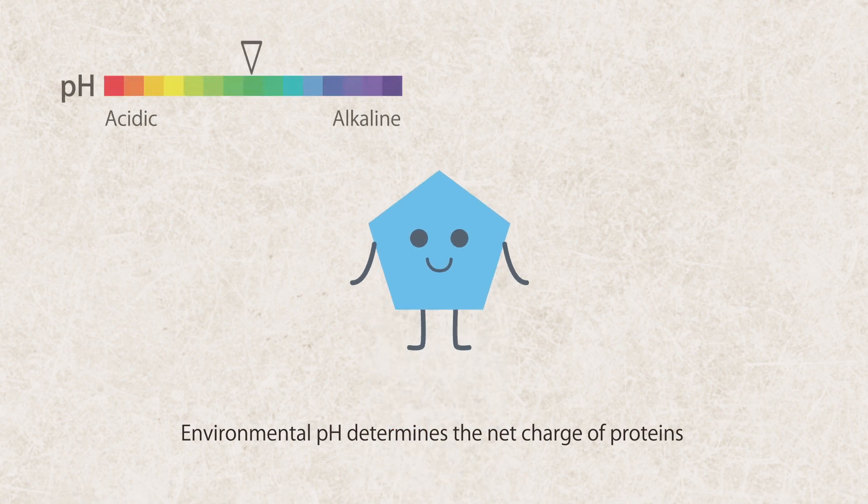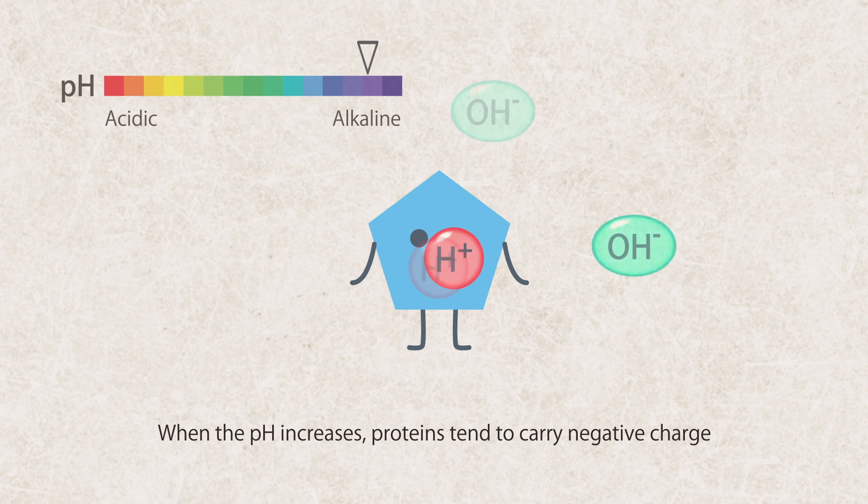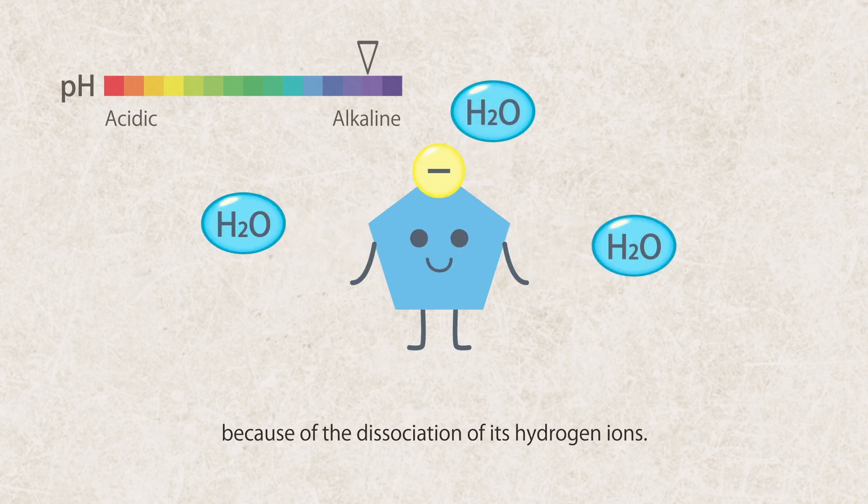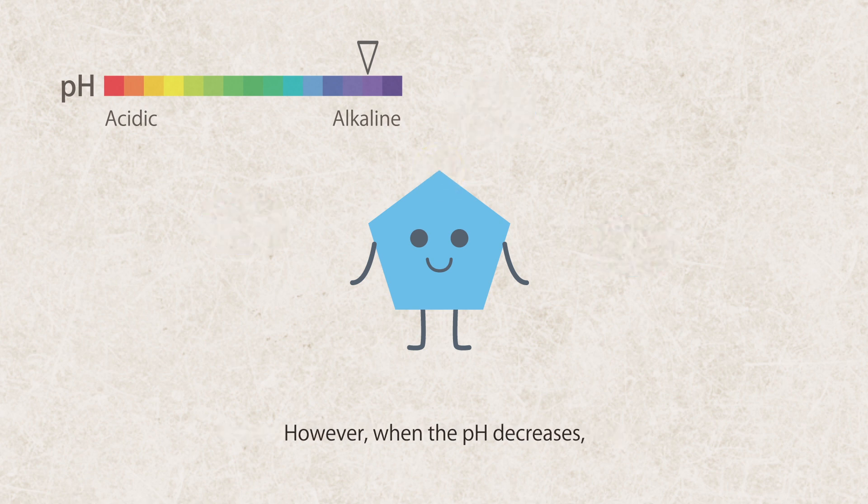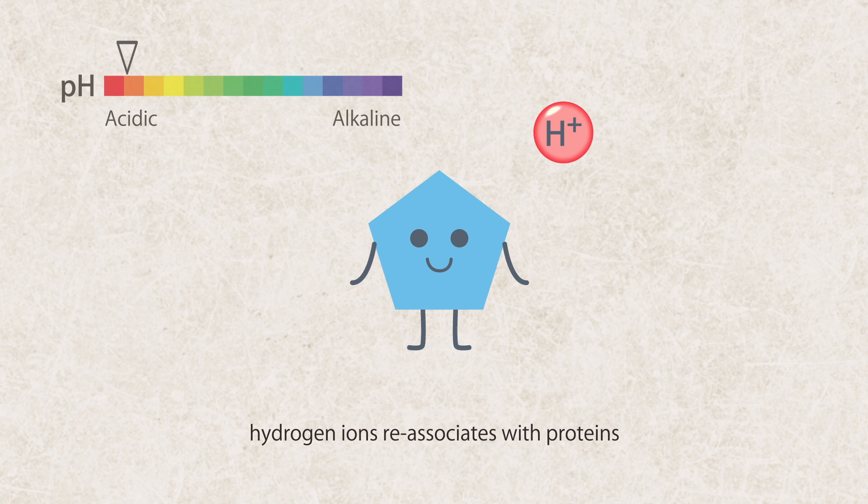Environmental pH determines the net charge of proteins. When the pH increases, proteins tend to carry negative charge because of the dissociation of its hydrogen ions. However, when the pH decreases, hydrogen ions reassociate with proteins and therefore proteins tend to carry positive charge.